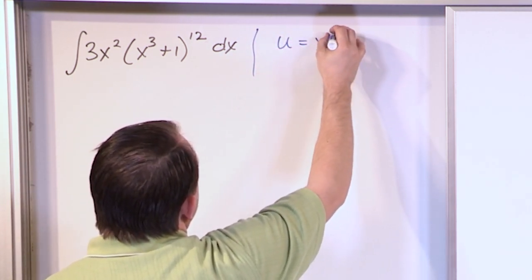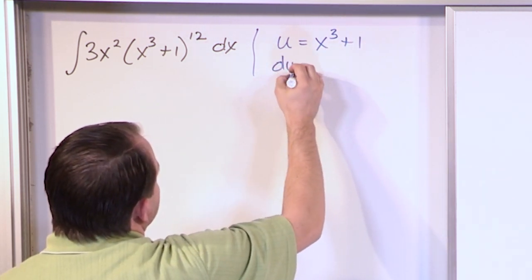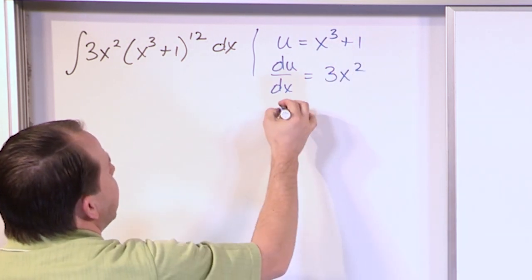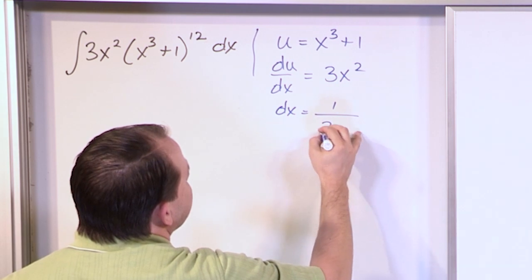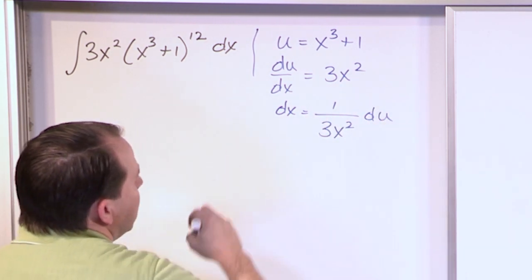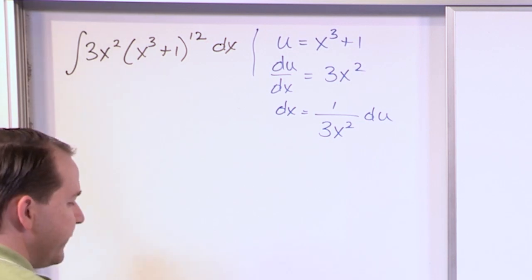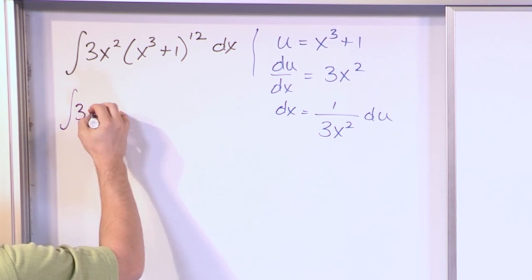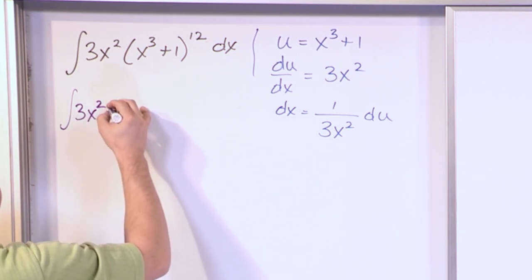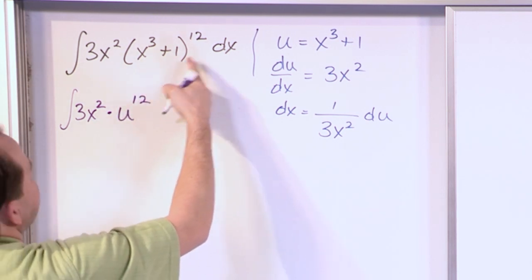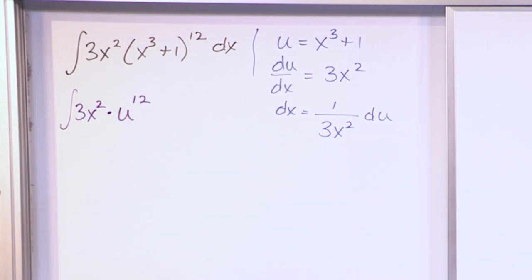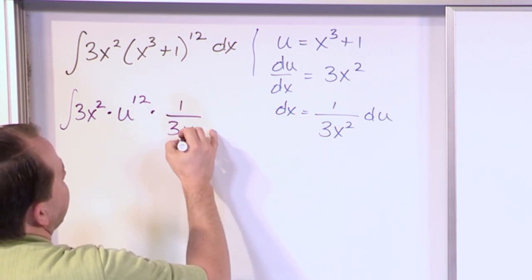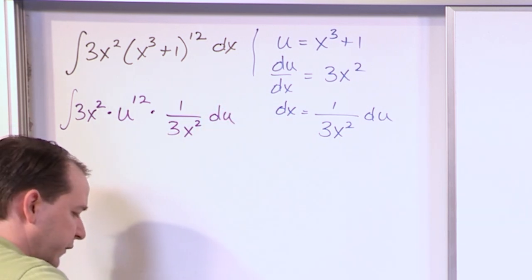u is equal to x cubed plus 1. So du/dx is 3x squared, and dx equals 1 over 3x squared du. That's the information we need to substitute in. We have the integral of 3x squared times u to the 12th power, times 1 over 3x squared du.